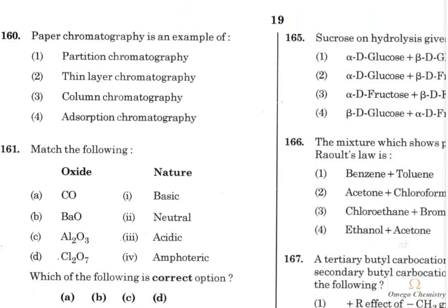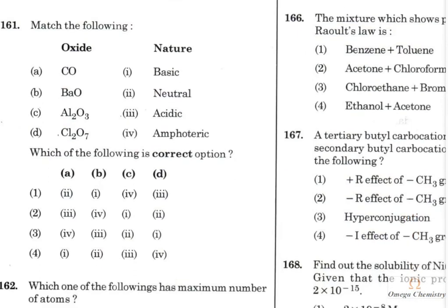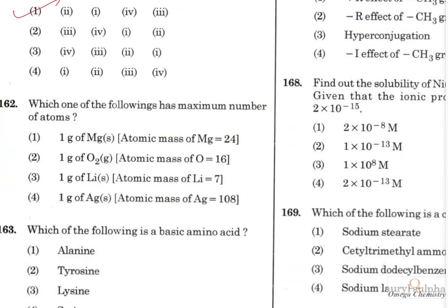Question 169: Paper chromatography is related in principle to thin-layer chromatography. Match the following for oxide character: carbon monoxide is a neutral oxide; barium oxide is a basic (metallic) oxide; aluminium oxide is amphoteric; Cl₂O₇ is highly acidic. So A → 2, B → 1, D → 3, and the corresponding option is the right answer.